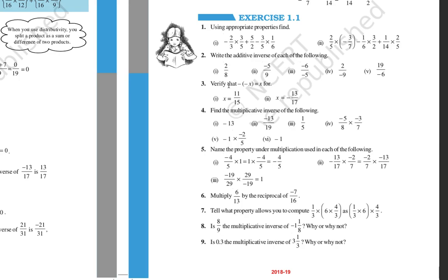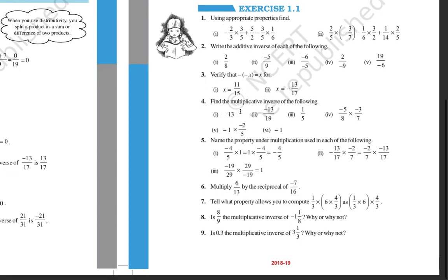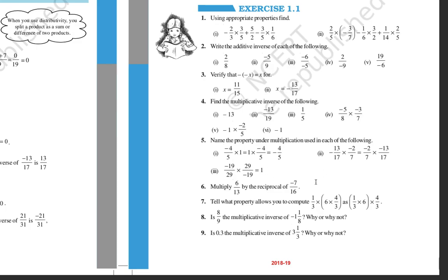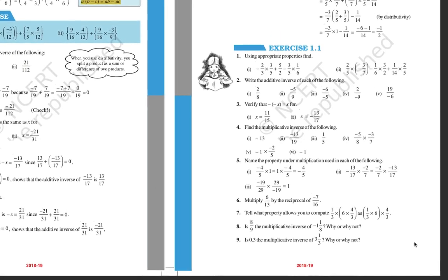For multiplicative inverse: find a number that when multiplied gives 1. So the multiplicative inverse of minus 13 is minus 1 by 13. The multiplicative inverse of minus 13 by 9 is minus 9 by 13. You have to try these exercises. After this, we have the representation of rational numbers on the number line, which we will discuss in the next class.